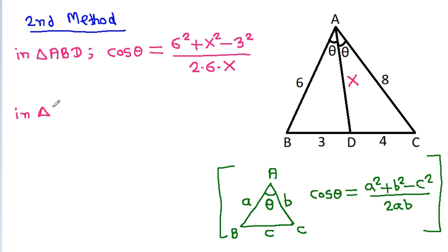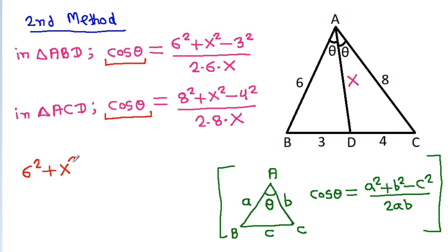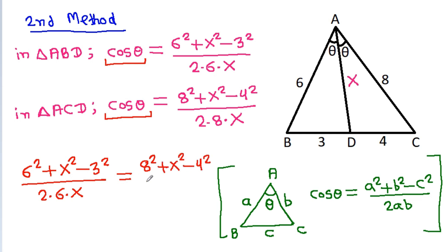And in triangle ACD, cos theta equals 8 squared plus x squared minus 4 squared, divided by 2 times 8 times x. Since both expressions equal cos theta, we set them equal: (36 + x² − 9) divided by 12x equals (64 + x² − 16) divided by 16x.